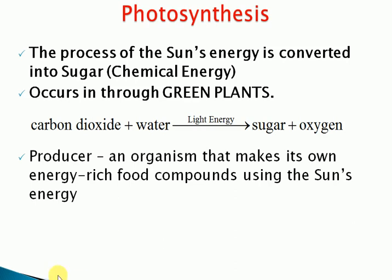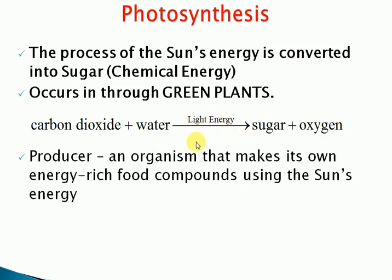Carbon dioxide — atmospheric carbon dioxide — plus water, using light energy from sunlight, in the presence of chlorophyll green pigments, undergoes the process of photosynthesis to produce sugar plus oxygen.